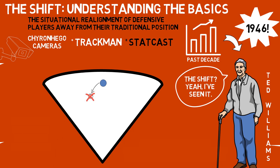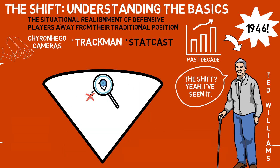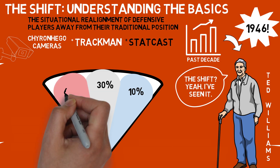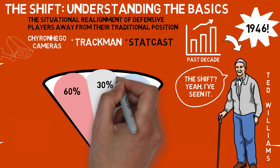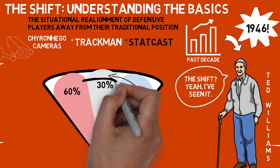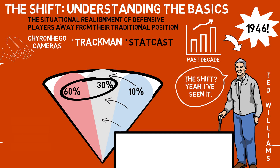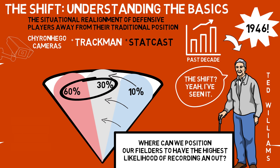With this information easily accessible, teams have begun to use it to position players more effectively. For example, if a player hits 10% of their balls to right field, 30% to center, and 60% to left, it would only make sense to have more players in the zones where the player hits the ball more frequently. Perhaps 10% of the time you may get burned, but those are odds worth taking. The overall goal of the shift is to put fielders in the best position possible to increase the likelihood of recording an out.